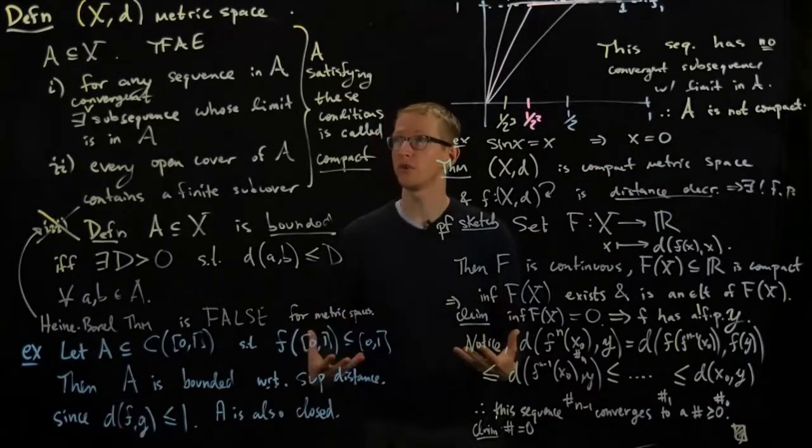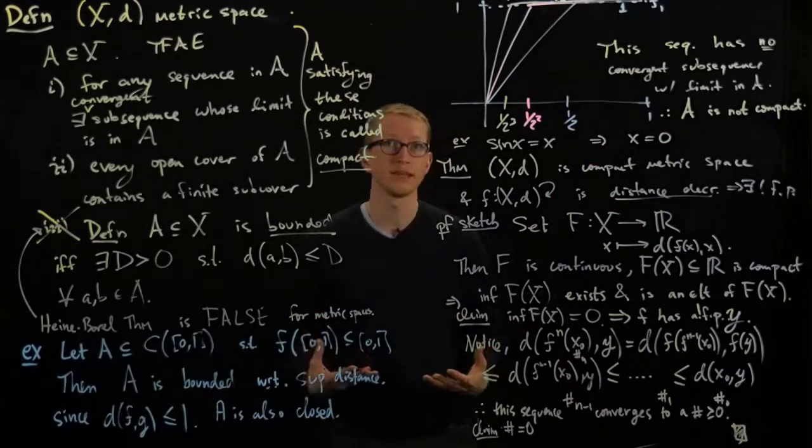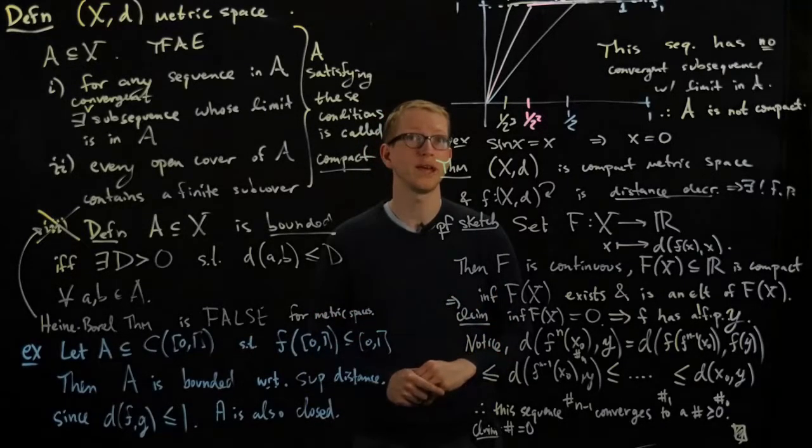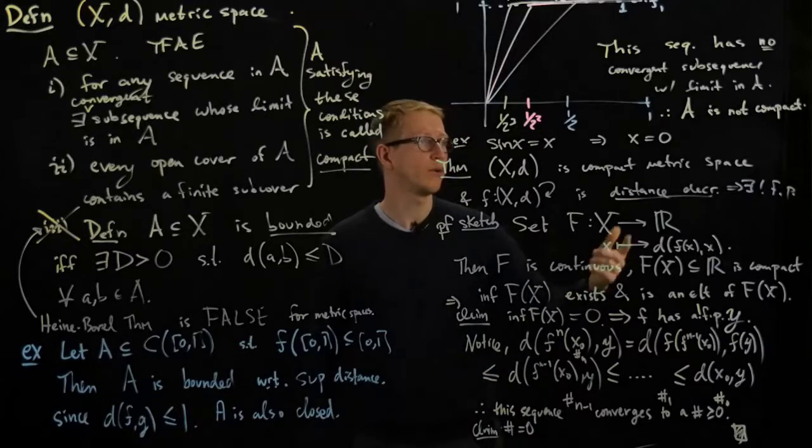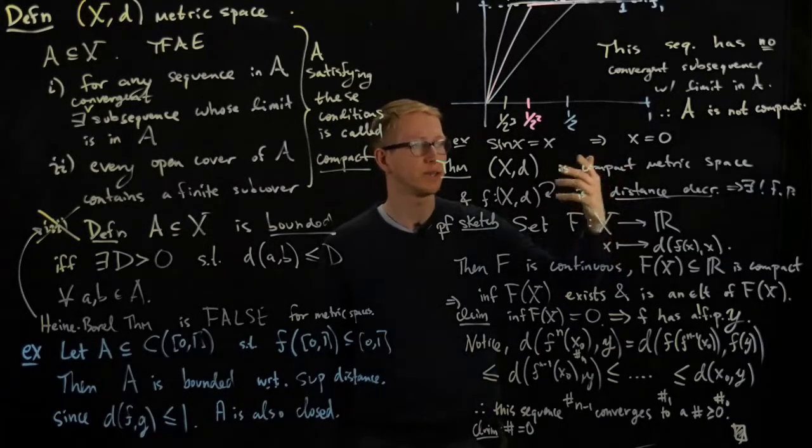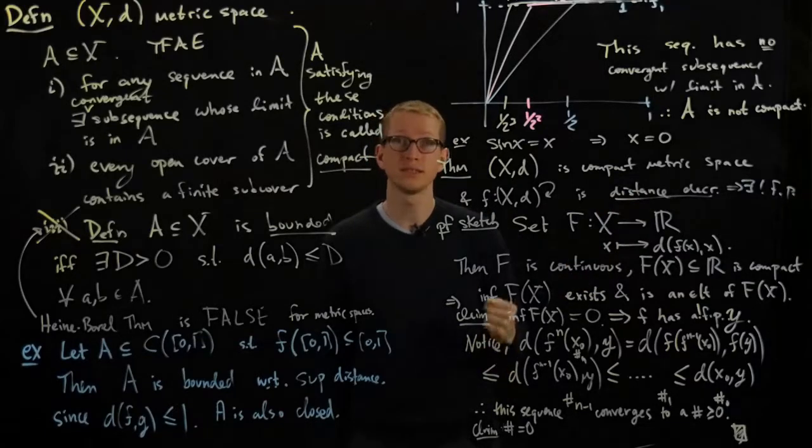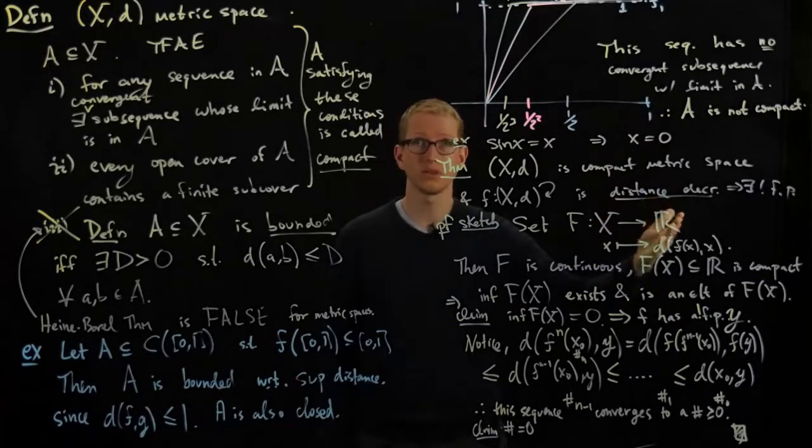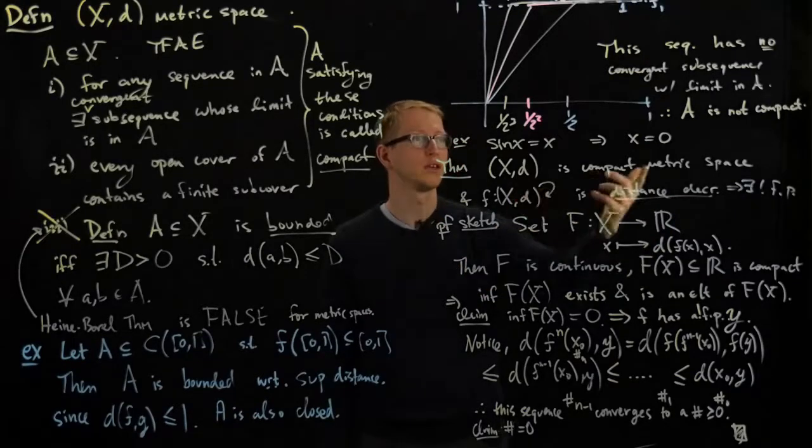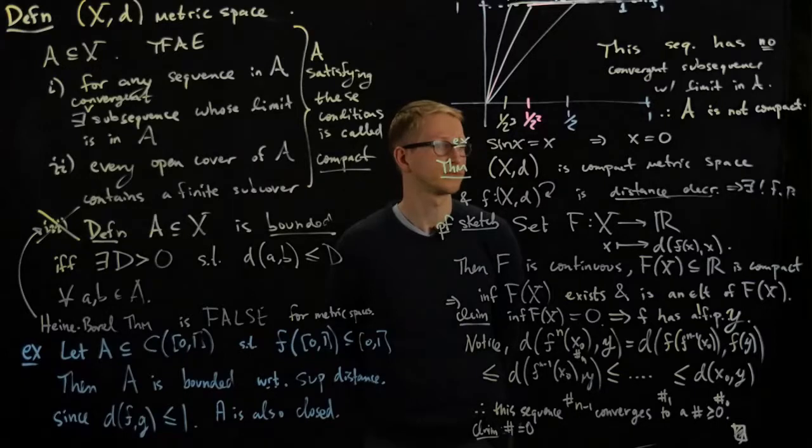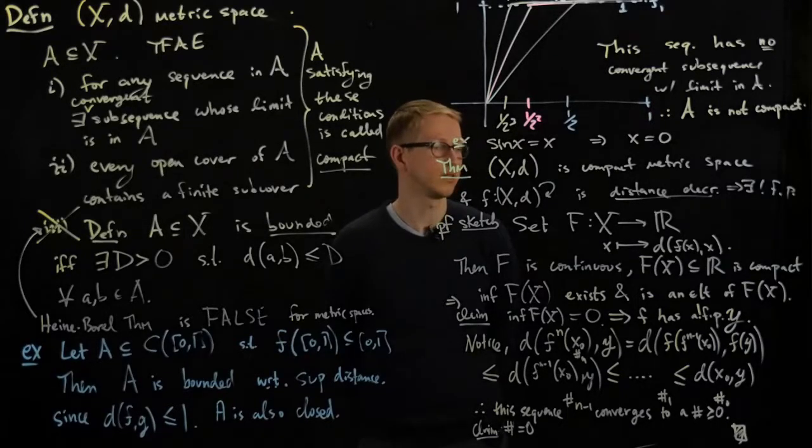So this gives us yet another condition on a metric space that guarantees the existence of a unique fixed point, even if you don't have a contraction. However what we do need, a sufficient condition would be that the space is compact and you have a distance decreasing function. And we know that contraction implies distance decreasing but not conversely, so the additional assumption of compactness is indeed needed here to guarantee the existence of a unique fixed point.